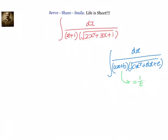This problem is of the type dx divided by (ax plus b) into square root of (cx squared plus dx plus e). For this type of problem to solve, we will consider ax plus b equal to 1 by t, so that we can simplify.